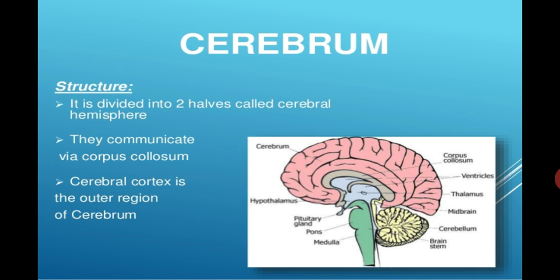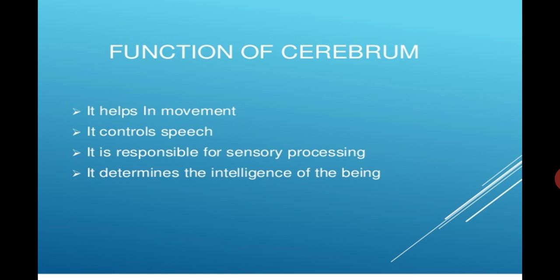Now we will talk about the cerebrum. It is divided into two halves called the cerebral hemispheres. They communicate via corpus callosum. The largest part of the brain is the cerebrum. Cerebral cortex is the outer region of the cerebrum. It helps in movement, controls speech, is responsible for sensory processing, and determines the intelligence of the being.